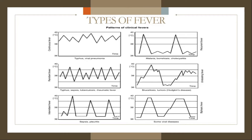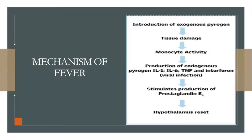There are some fever patterns for different types of fever. The mechanism of fever involves introduction of exogenous pyrogens causing tissue damage and monocyte activation, leading to increased production of endogenous pyrogens — interleukin-1, interleukin-6, tumor necrosis factor, and interferon — which stimulate prostaglandin E2 production, causing hypothalamus reset and thus fever.